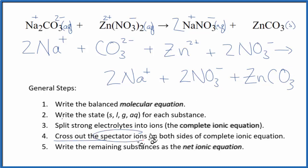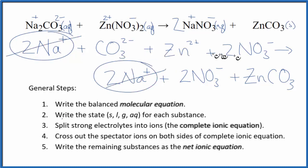Now we can cross out spectator ions. They're on both sides of the complete ionic equation. They haven't changed, so we're not really interested in them. In the reactants, I have two sodium ions. In the products, I have two sodium ions. Let's just cross those out. Here I have two nitrate ions, two nitrate ions. Let's cross them out. And what's left, that's the net ionic equation for Na2CO3 plus Zn(NO3)2.